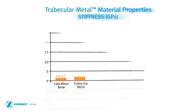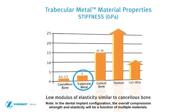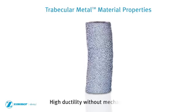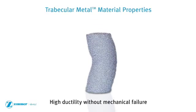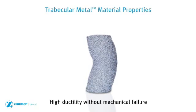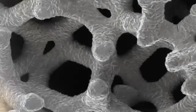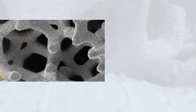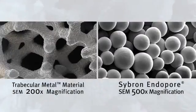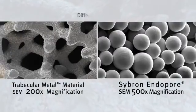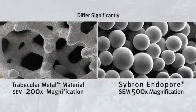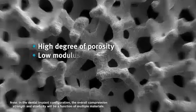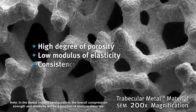Trabecular metal material has a low modulus of elasticity similar to cancellous bone. In compression testing, trabecular metal material exhibits high ductility without mechanical failure. While other manufacturers have tried to mimic the attributes of trabecular metal technology, sintered bead and other conventional porous coatings and materials differ significantly from trabecular metal material's high degree of porosity, low modulus of elasticity, and consistency in pore size and shape.